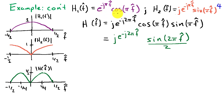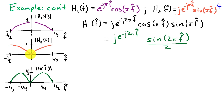The full frequency response of the cascade h of f hat is j e to the minus j 2 pi f hat times cosine of pi f hat times sine of pi f hat. Using a trig identity on the product of cosine and sine, we obtain that it's identical to sine of 2 pi f hat over 2. The magnitude of h of f hat is as drawn: it is 0 when f hat equals 0 because h2 is 0 there, and also 0 near f hat equals plus or minus 1/2 because h1 is 0 there. Zero times any number gives you 0.